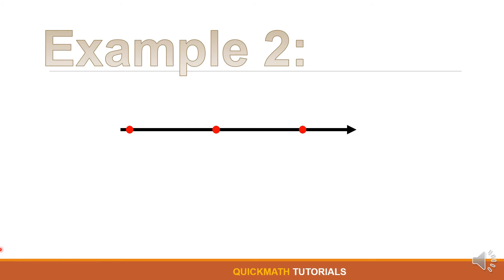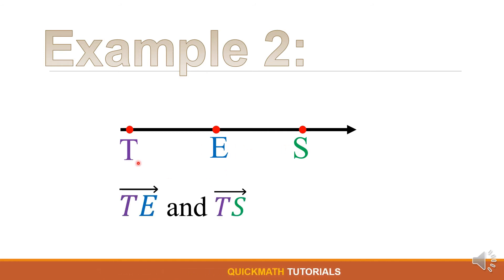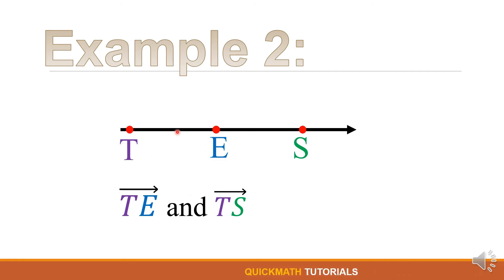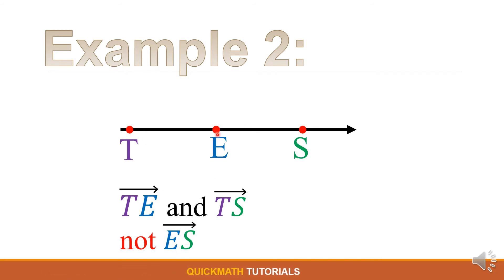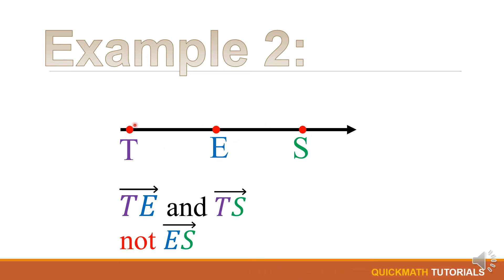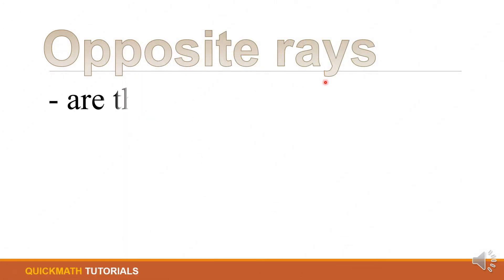Another example of a ray: we have a ray with three points T, E, and S. In naming this ray, we have ray TE, where T is the endpoint. We cannot name it ray ES since E is not the endpoint of this ray — only T is the endpoint.